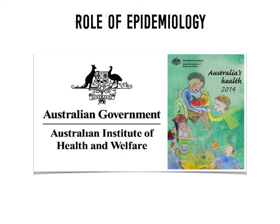A great example of this is the Australia's Health report, which is released every two years by the Australian Government through the Australian Institute of Health and Welfare. This document provides an overview or snapshot of the health of the Australian population and detailed statistical information about diseases affecting the population — for example, the biggest killer in Australia is cardiovascular disease, followed by cancer.